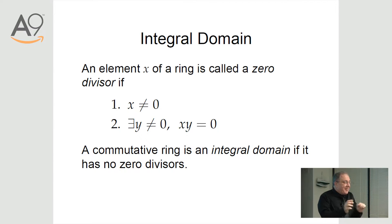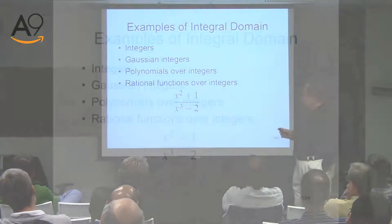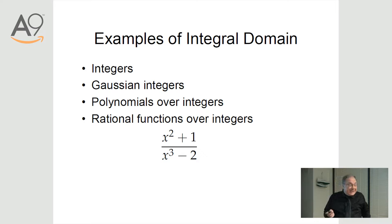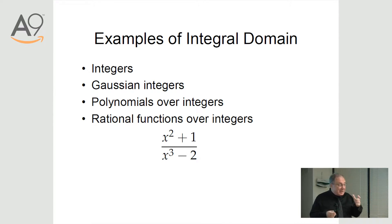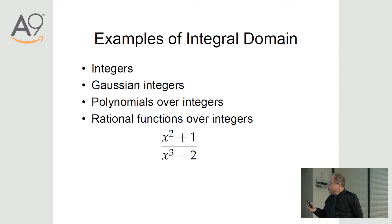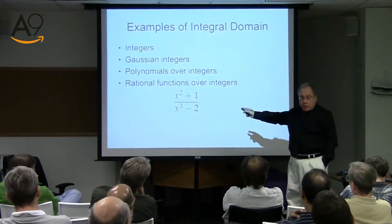It's not finiteness but primality that distinguishes. An integral domain is a ring with no zero divisors: the product of two non-zeros will never be zero. Examples of integral domains: integers, Gaussian integers, polynomials — univariate or multivariate — over integers or real numbers (x²+1 times x²−1 is x⁴−1, not zero), and rational functions over integers, which are ratios of two polynomials.